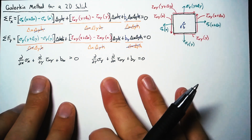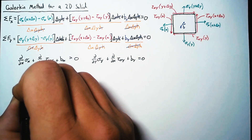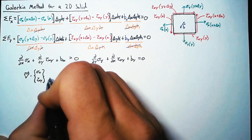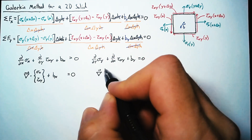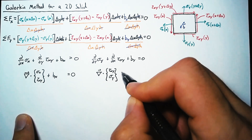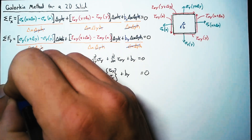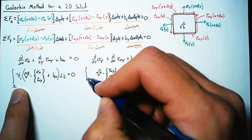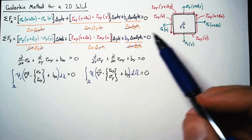Now we're going to do something a little unusual to prepare for the Galerkin method. The first two terms of our differential equation can be written as a gradient operator dotted with the vector [sigma x, tau xy], plus the body force term, equal to zero. Doing the same for the y equation, the gradient operator this time gives us [tau xy, sigma y] — because the d/dx is multiplying tau xy. Next, we apply the Galerkin method: we multiply by the shape function psi_i and integrate over the entire element omega.